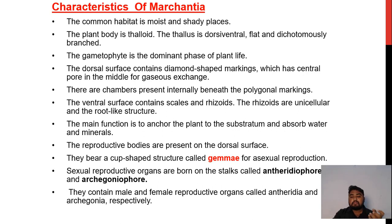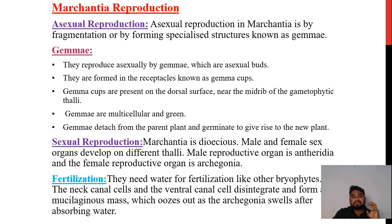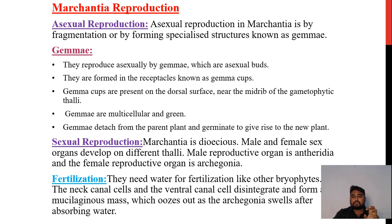The reproductive bodies are present on the dorsal surface. They bear a cup-shaped structure called gemma cups for asexual reproduction. Asexual reproduction in Marchantia is by fragmentation or by forming specialized structures known as gemma. Gemma are asexual buds formed in receptacles known as gemma cups. Gemma cups are present on the dorsal surface near the midrib of the gametophyte thallus. The gemma are multicellular and green. They detach from the parent plant and germinate to give rise to a new plant.